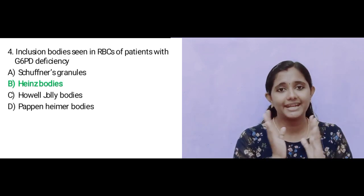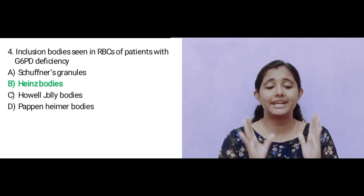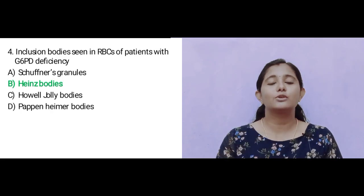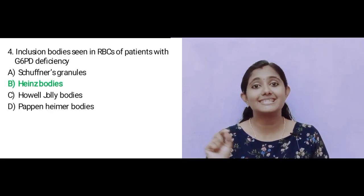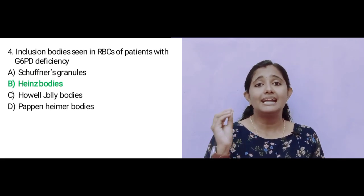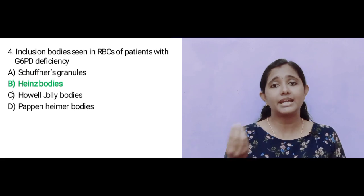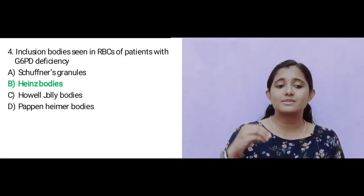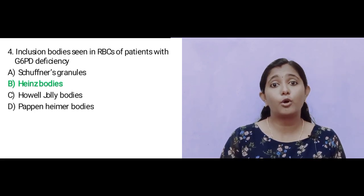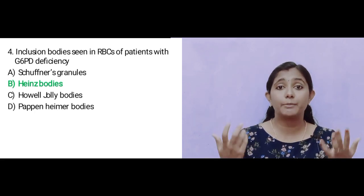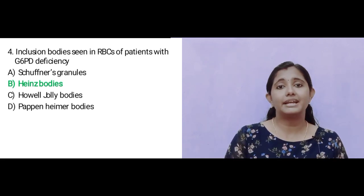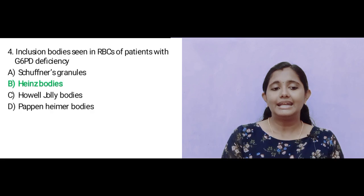Heinz bodies result from denaturation of hemoglobin. In G6PD deficiency, hemoglobin becomes unstable. They are also seen in unstable hemoglobin disorders, chemical poisoning, and drug-induced toxicity.